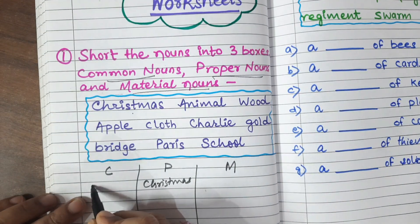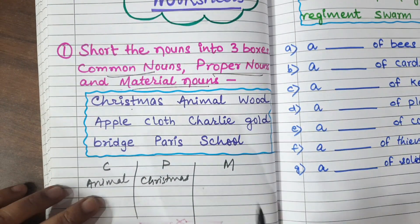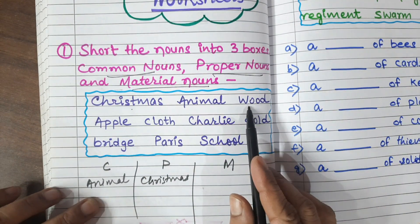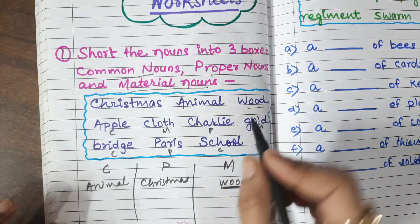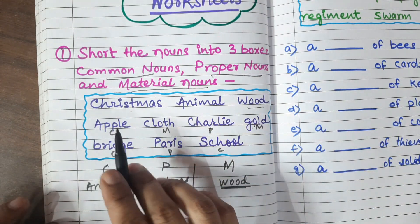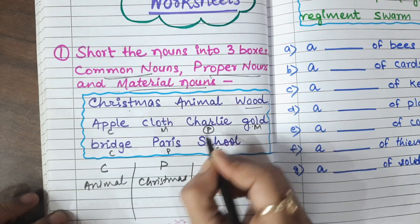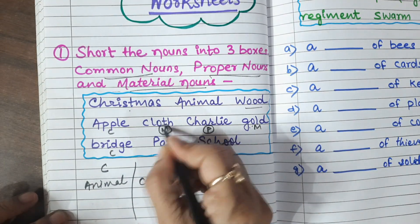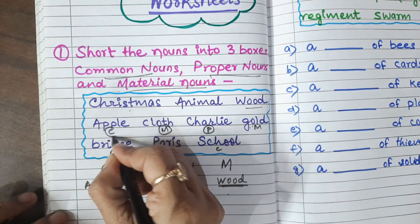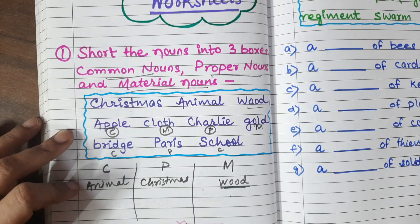Animal: this will come in common nouns. And wood: material nouns. You can also write them in a circle — P for proper, C for common and M for material nouns. This is also a format that feels very easy for a child to do.